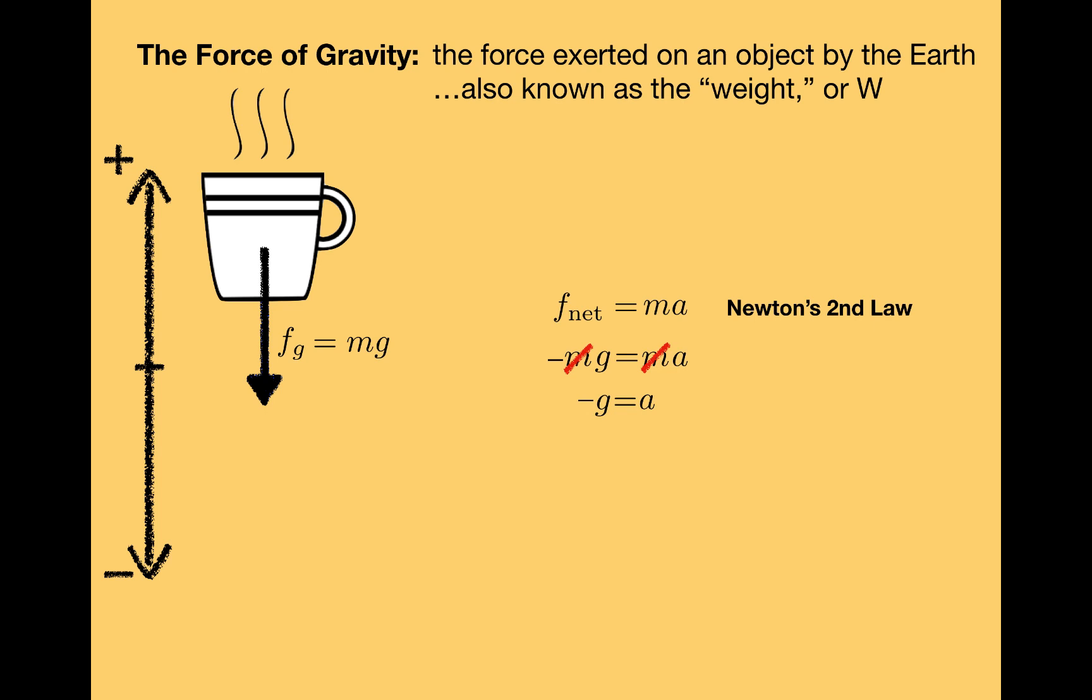And it looks like the acceleration for any object in freefall is negative g. This result does not have anything to do with mass, so we should expect all objects in freefall to accelerate at the same rate. A good way to think about this is that for a more massive object, the force that gravity exerts on the object will be bigger, but so will its inertia. The net result is that all objects in freefall accelerate at the same rate.